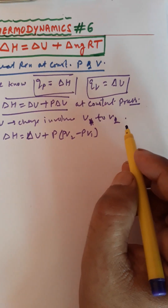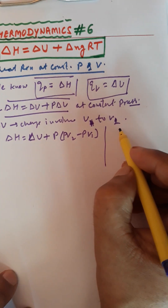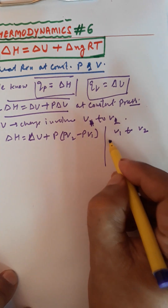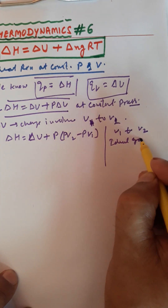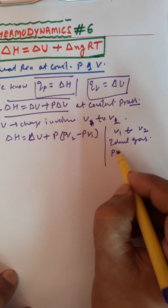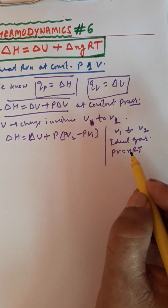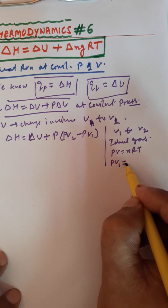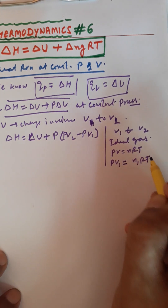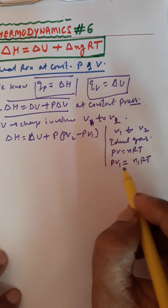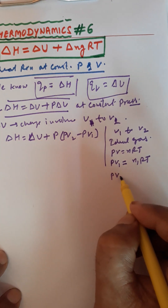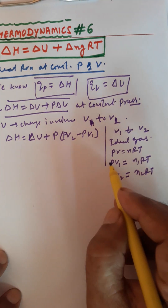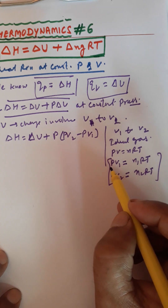यहाँ पर gas का जो volume है, initial volume V1 से V2 तक जा रहा है finally। अब हमारे पास जो gas है यह ideal gas है — we know that PV = nRT। States of matter में अपने पढ़ा होगा यह ideal gas equation है। तो first case में PV1 में N1RT आएगा क्योंकि R gas constant है, pressure भी constant है। इसलिए final volume V2 में N2RT आएगा।